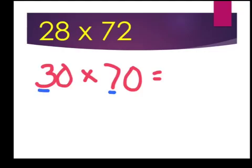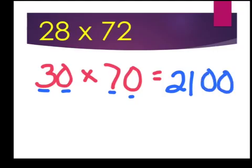And 3 times 7 is? 21. And then I tack on, in this case, two zeros. Two zeros, and then I come in with my comma. 2100 is not the actual answer of 28 times 72. It's an estimated answer of 28 times 72.